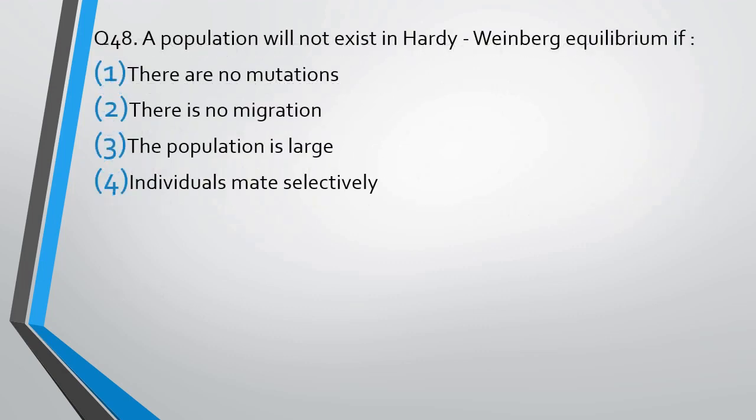Question number 48. A population will not exist in Hardy-Weinberg equilibrium if there is: no mutation, no migration, the population is large, or the individuals are mating selectively.